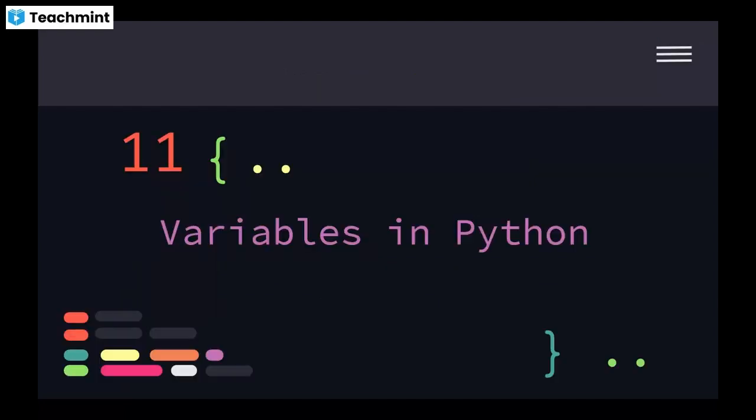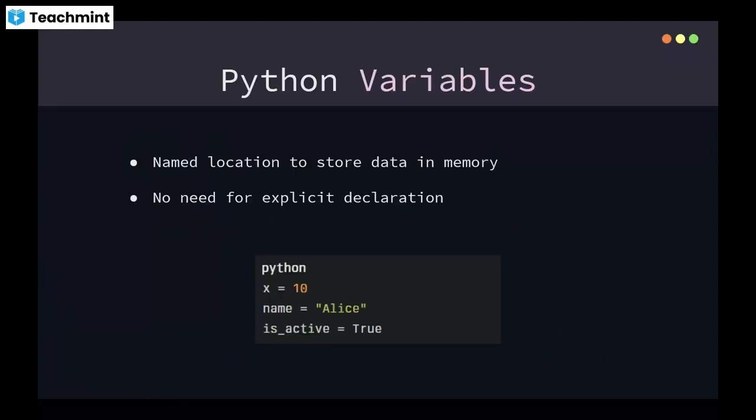Let's move on to the next topic: variables in Python. In programming, a variable is a name or location used to store data in memory.